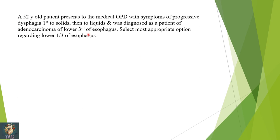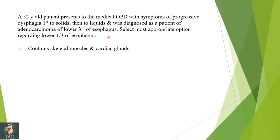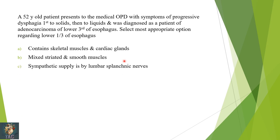Next MCQ: a 52-year-old patient presents with symptoms of progressive dysphagia, first to solids then to liquids, and was diagnosed with adenocarcinoma of the lower third of the esophagus. Select the most appropriate option regarding the lower third of the esophagus: (1) contains skeletal and cardiac muscles and cardiac glands, (2) mixed skeletal and smooth muscle cells, (3) sympathetic supply by lumbar splanchnic nerves.